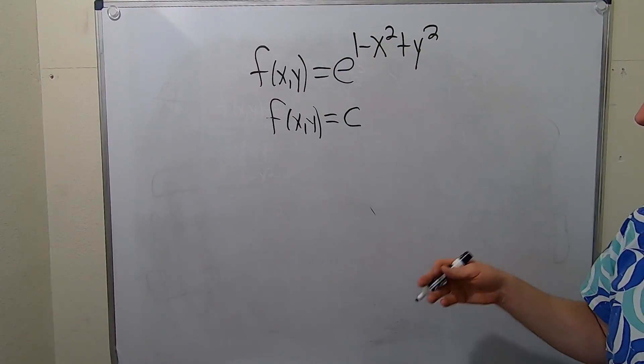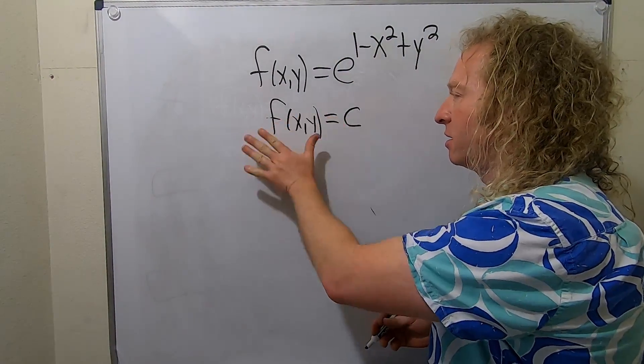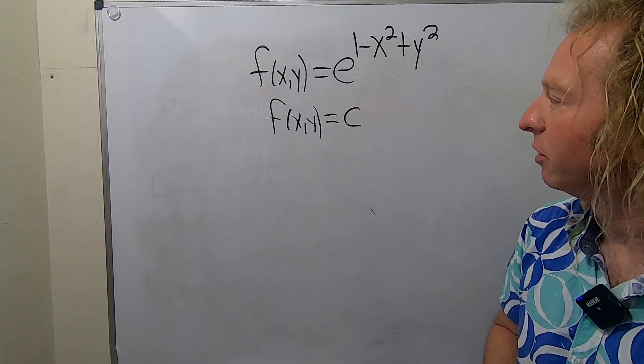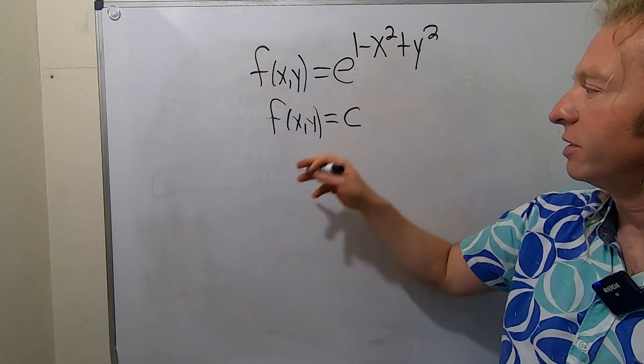To find the level curves, we always start by setting this equal to a constant. So now what do we do? Well, we just replace f with whatever is here.